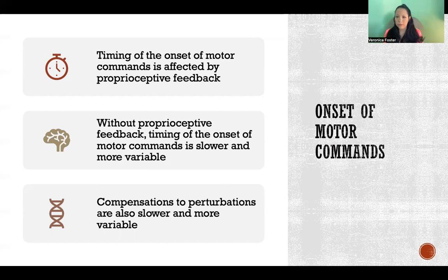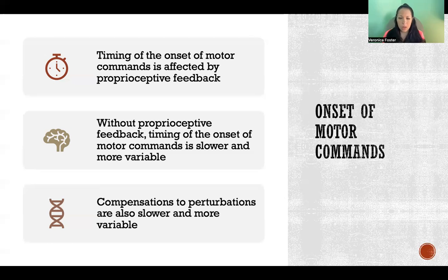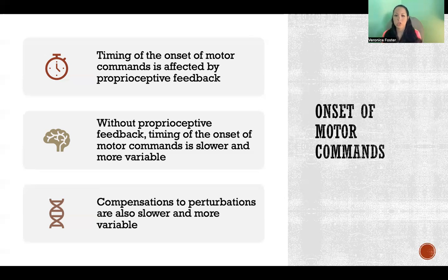We're able to compensate so that we don't fall and can still successfully execute the movement. Without proprioceptive feedback, we're not able to compensate for perturbations as well — those compensations happen more slowly and less predictably. In the case of stepping on ice, the compensation might be too slow to prevent a fall.